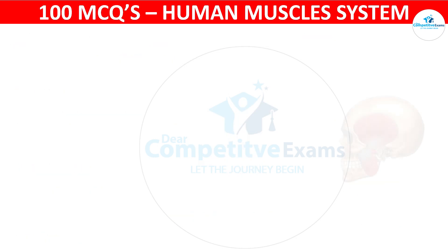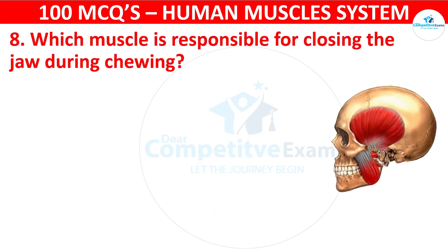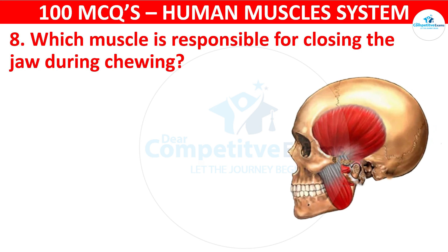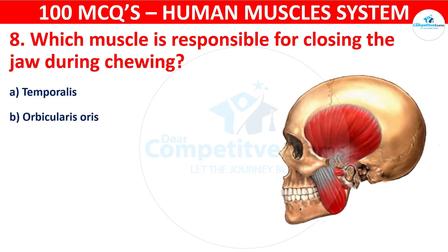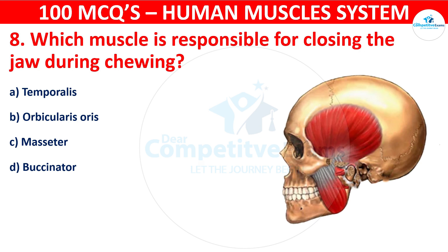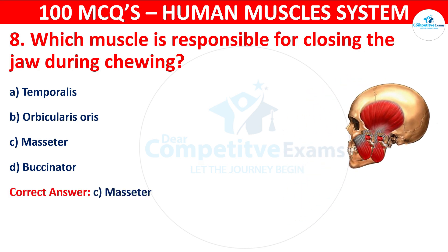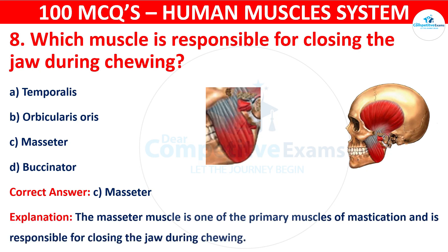Question number eight: Which muscle is responsible for closing the jaw during chewing? Your options are: Temporalis, Orbicularis oris, Masseter, or Buccinator. The correct answer is C, that is masseter. The masseter muscle is one of the primary muscles of mastication and is responsible for closing the jaw during chewing.